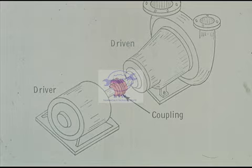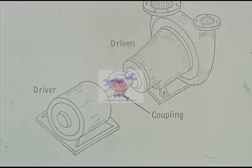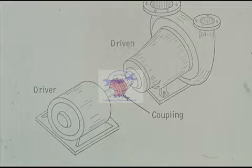In the case of rotating equipment, some device is needed to connect the shaft of the driver to the shaft of the driven equipment. This device is a coupling.